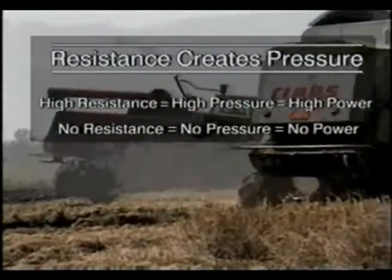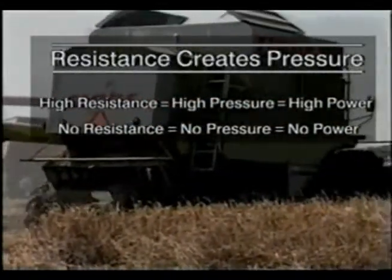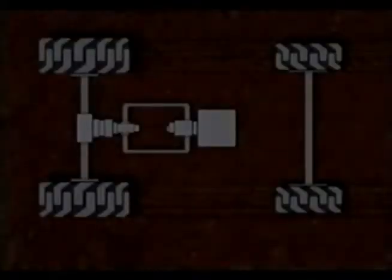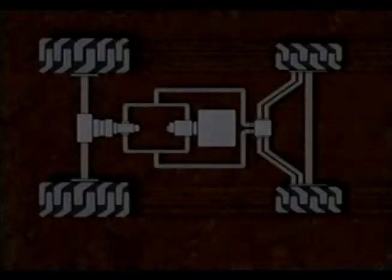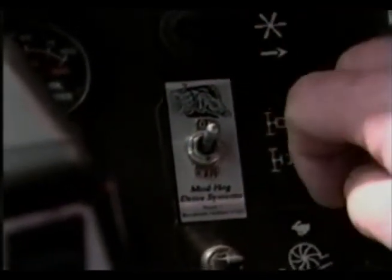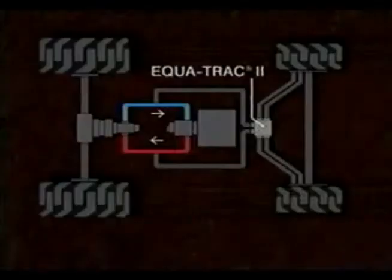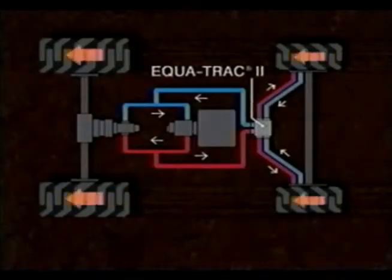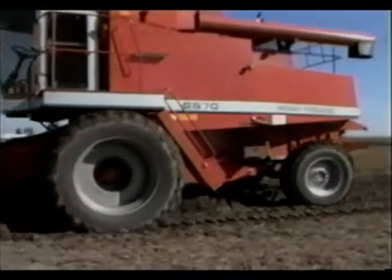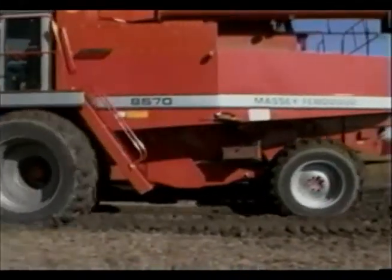Now let's see how flow and pressure are created in a mudhog rear wheel drive. The mudhog tees into the hydrostatic drive system between the pump and the motor. When you turn the Equitrack 2 control valve on with the electrical switch in your cab, you are turning on the mudhog system. This diverts some of the hydraulic fluid to the mudhog, which reduces flow to the main hydraulic drive motor. Lower flow means lower speed, so you'll notice the vehicle slows down slightly.